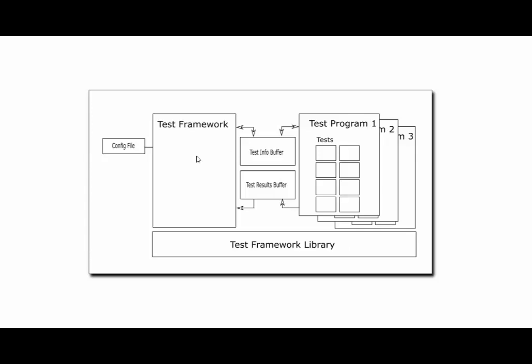At the end, it will use an output formatter to format that test information. There could be multiples — currently I only have an HTML one. If you're in a group environment or a more challenging environment, you might want XML or something like that, which can be read by another program to send out emails, update a bug database, whatever you'd like. These components need to share a little bit of information, so there is a test framework library that defines the test results stuff, the base class for the test programs, and the test information buffer stuff between them.